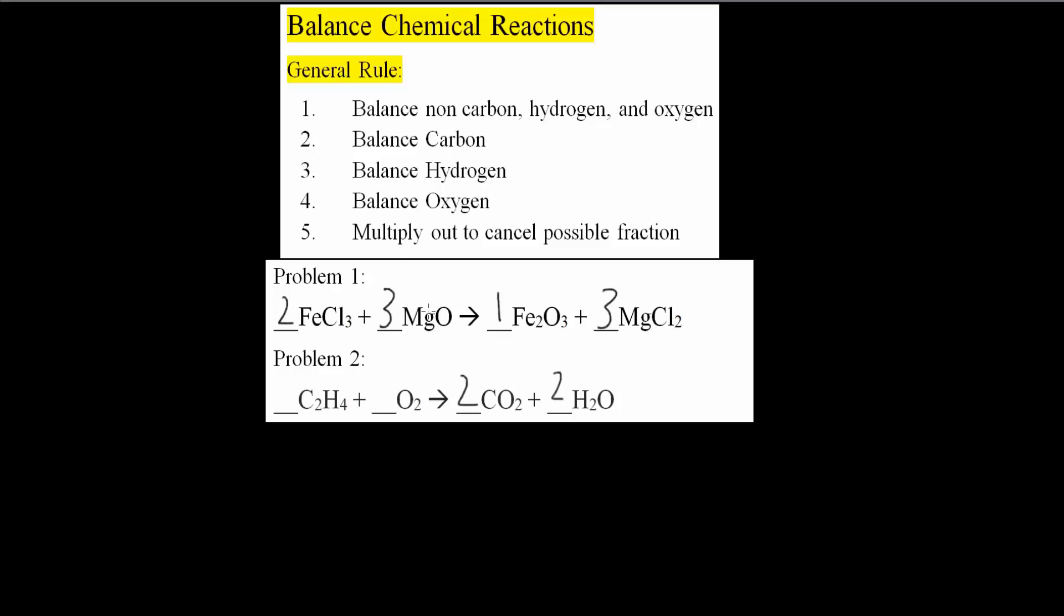Finally, oxygen. So here we have 2, and here we have 2 times 2 is 4, 4 plus 2 times 1 is 2, so we have 6 oxygens. So simply put a 3 here, 3 times 2 is 6, so this is nice and balanced.